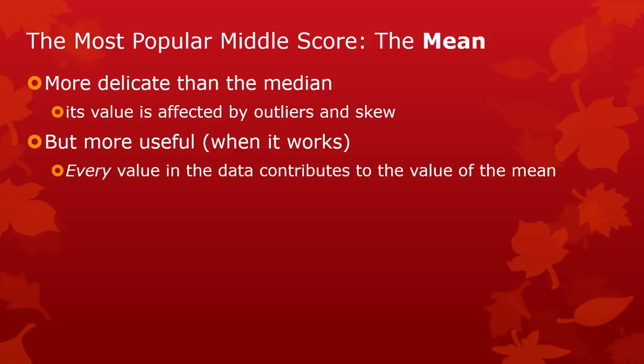When the mean works, it's more useful to us, especially because of its mathematical properties. One of its properties is that every single value in the data was used to calculate the mean. So if you change the value of one observation in the data, just a tiny bit, make it a little higher, a little lower, the value of the mean changes. Maybe only a tiny bit, but it does change. The mean is sensitive to everything, and we love that.